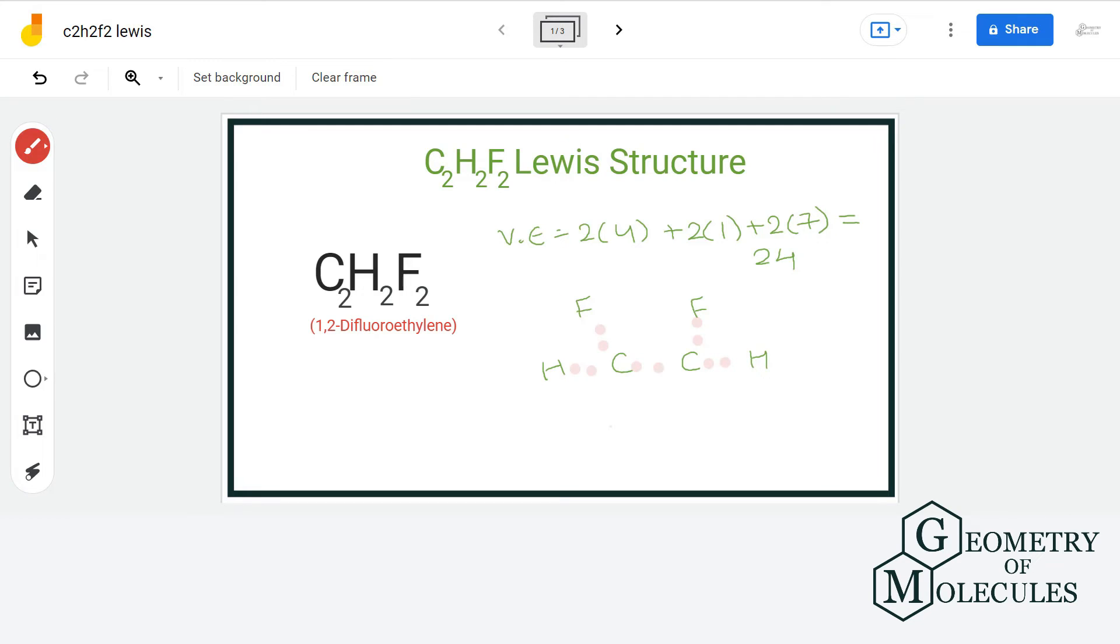As you can see, fluorine needs 6 more electrons for complete octet, and so we will assign 6 electrons to each fluorine atom.